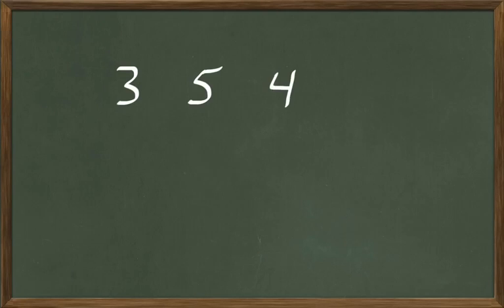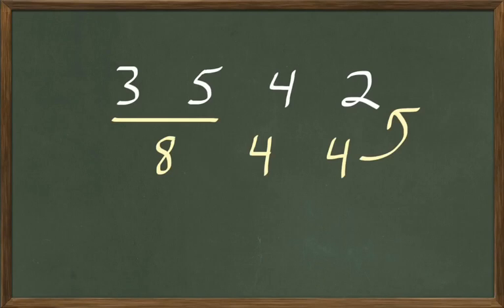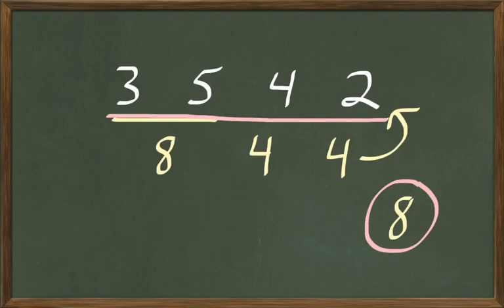Let's try the next one. How many are 3 and 5 less 4 multiplied by 2? First we'll add 3 and 5: that's 8. Then we subtract 4 from 8: 8 less 4 are 4. Then multiplied by 2 — it's 2 times 4 because we're multiplying 4 two times. 2 times 4 is 8. So 3 and 5 less 4 multiplied by 2, the answer is 8. Not so hard, is it?